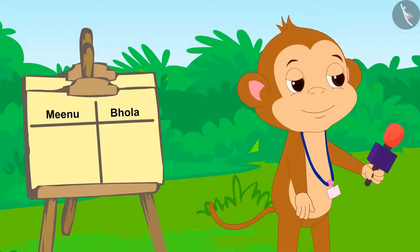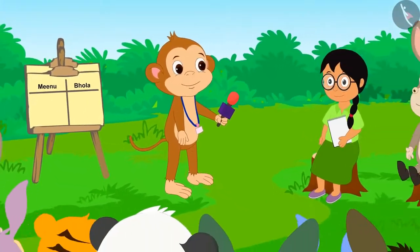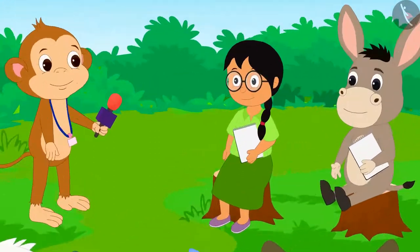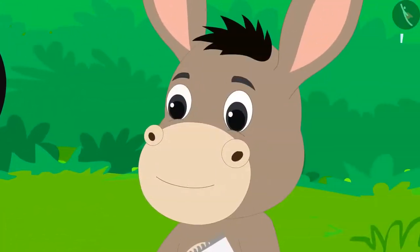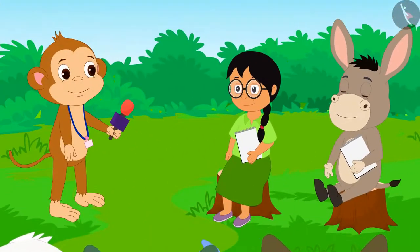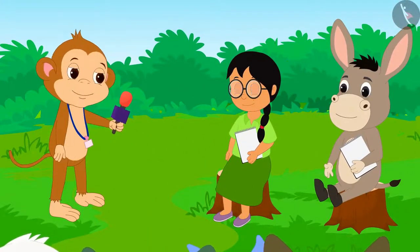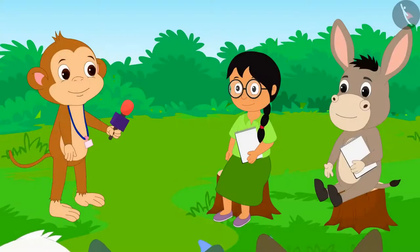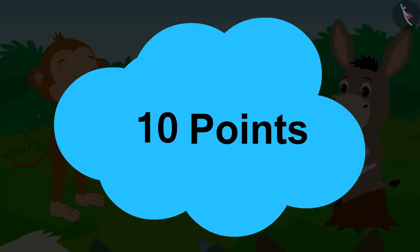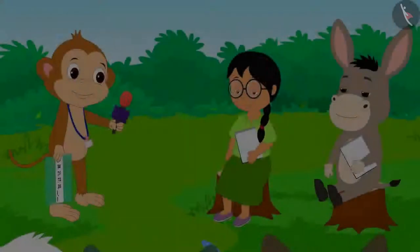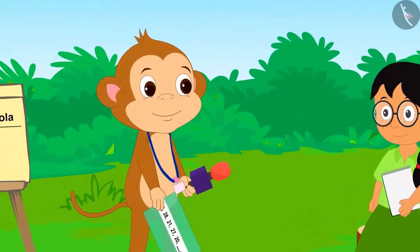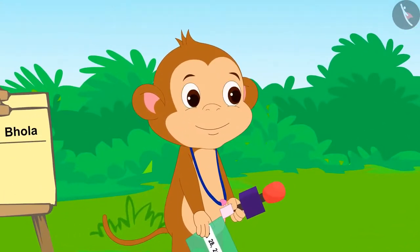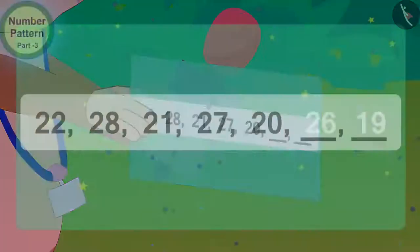Today, a unique game is being played in Champapur. Meenu and Bola have taken part in this game. In the game, both of them have to complete the number pattern. The one who completes the number pattern correctly first will get 10 points. The game's organizer, Babban, showed them both these number patterns.